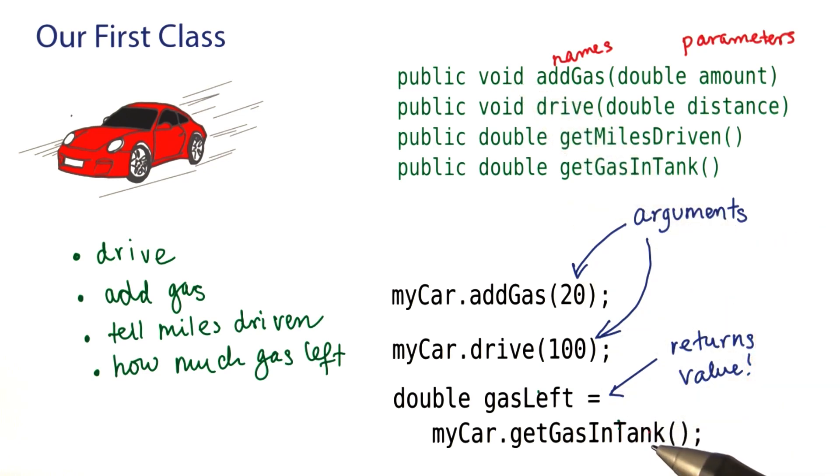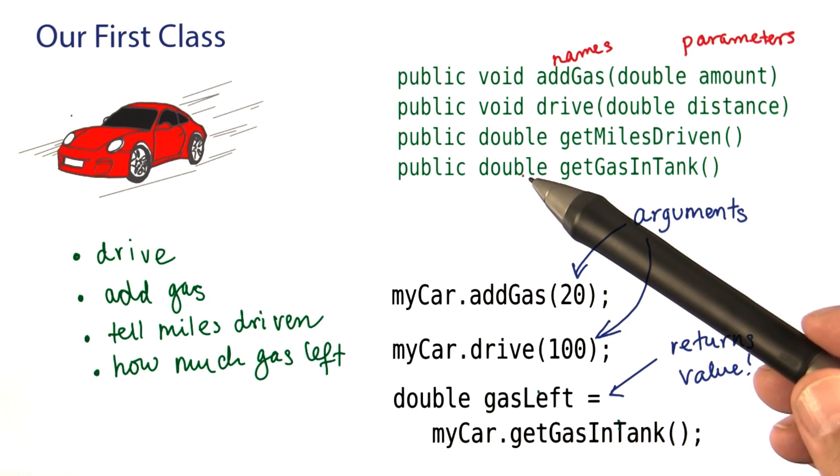In contrast, get gas in tank has no arguments, so there's no parameter variable here. But it returns a number, so we put the keyword double here.